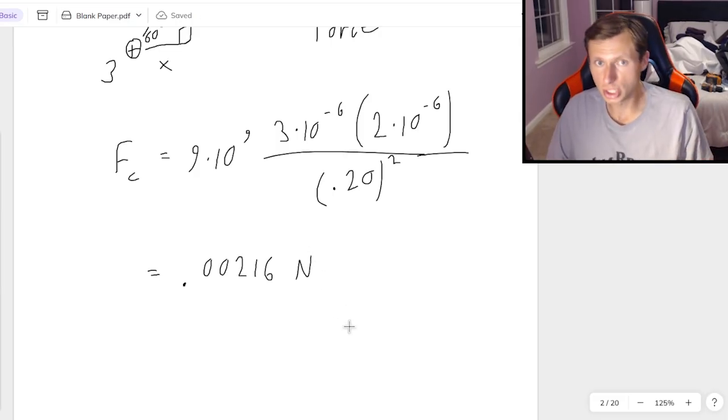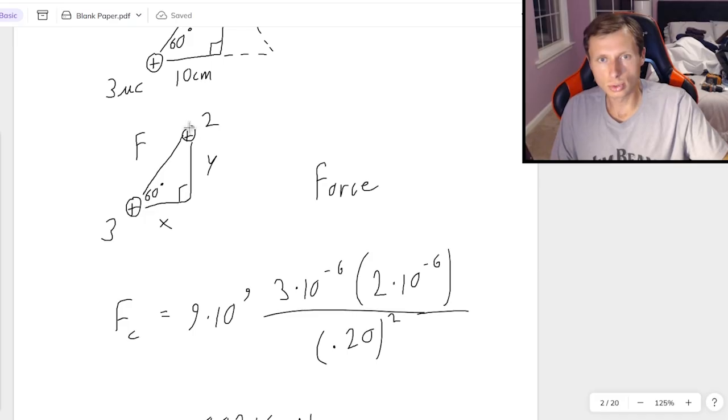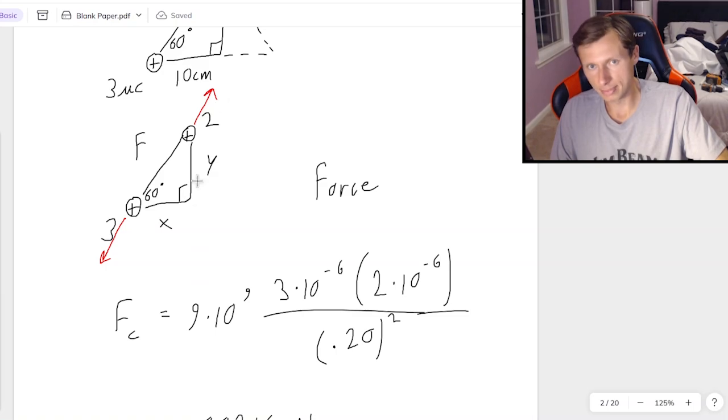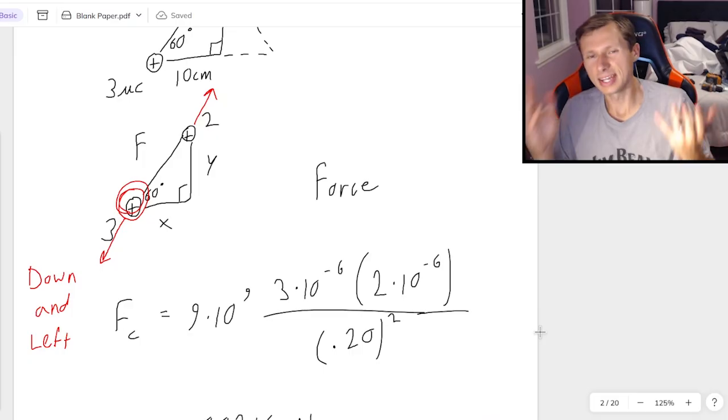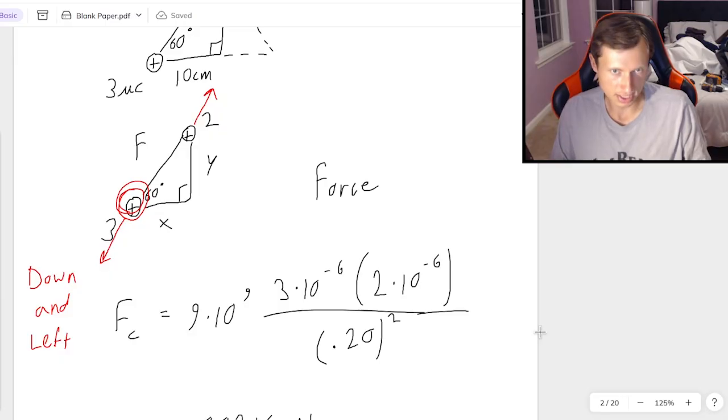But when it comes to the direction, this is where it starts to get complicated because the direction is on a diagonal. Look at these two charges right here. They are both positive. That means they're going to want to go away from each other. The 3 microcoulomb goes down to the left. The 2 microcoulomb goes up to the right. But since I'm only caring about the 3 microcoulomb, my direction is going to be down and to the left.